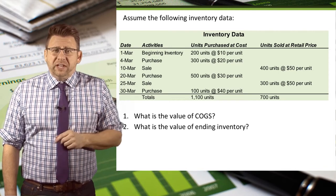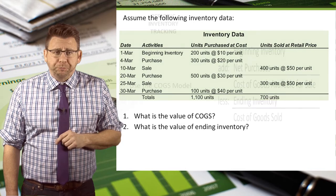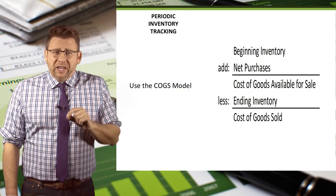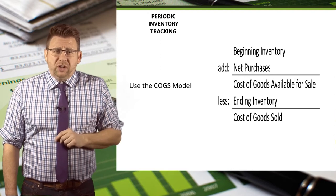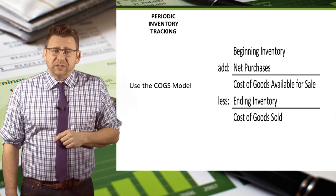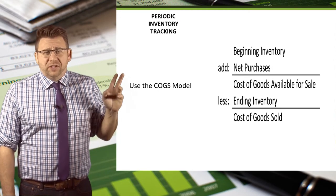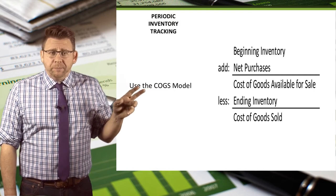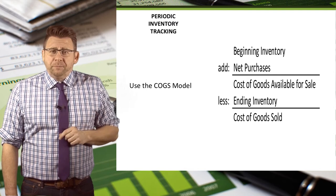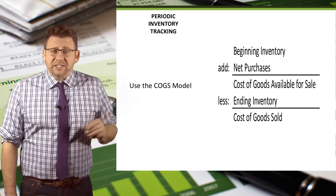Since inventory isn't accounted for after each transaction, we need to use the cost of goods sold model to determine the value of cost of goods sold and ending inventory. The cost of goods sold model is: beginning inventory plus purchases equals goods available for sale. From that, we can subtract ending inventory to arrive at cost of goods sold.